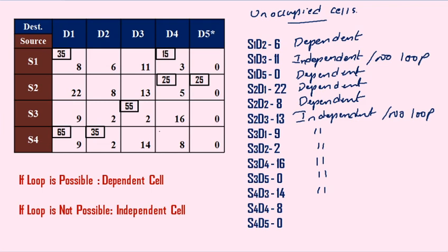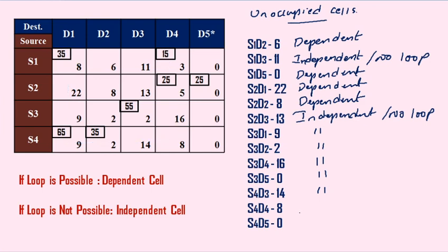Next case: S4, D4. I have two possibilities — left side or right direction. Moving left — stop — then upward direction, then right direction — yes, a complete loop is formed. So S4, D4 is having a loop — it is a dependent cell.